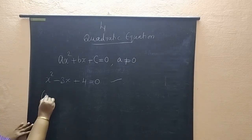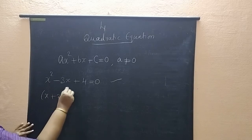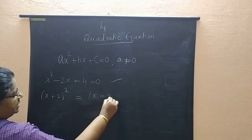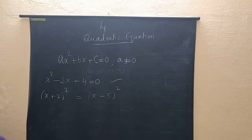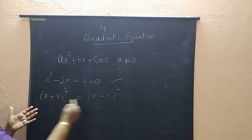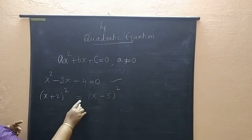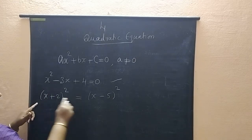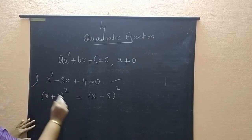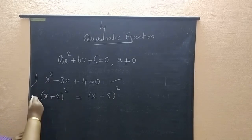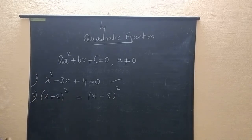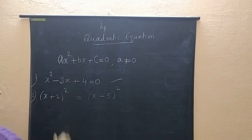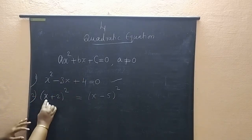Now consider the equation (x + 2)² = (x - 5)². This is also an equation since it is connected with an equals sign. Is it a quadratic equation? To check, you have to simplify and convert it into standard form.